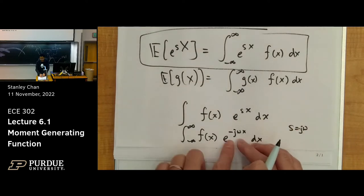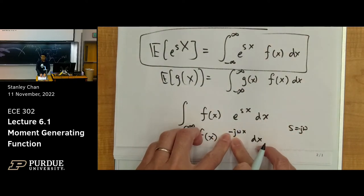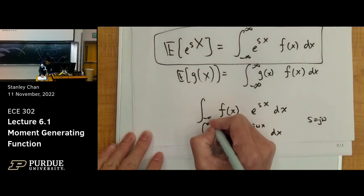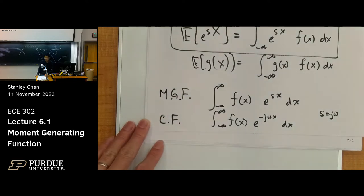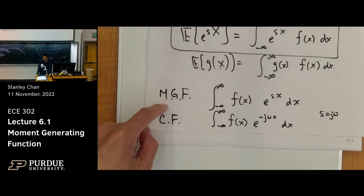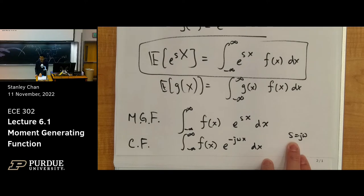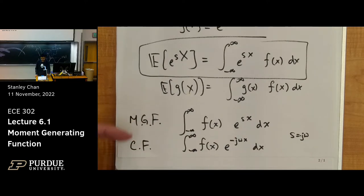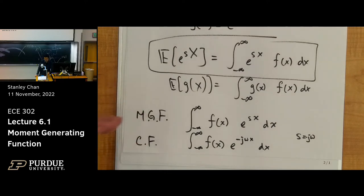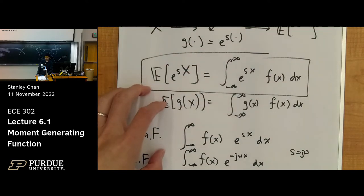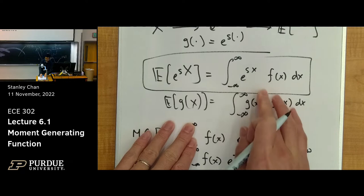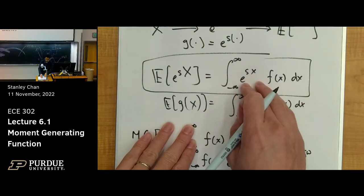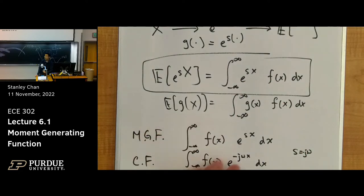Clearly, this is a special case: the characteristic function is where S equals j omega. So we have two names. This is called the moment-generating function. This is called the characteristic function. The characteristic function is a special case of the moment-generating function where you restrict S to be minus j omega. You need both the expectation and the exponential function to do this transformation appropriately. This is the definition of the MGF and the characteristic function.